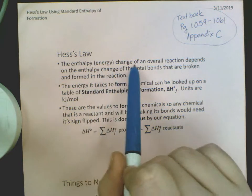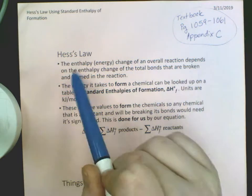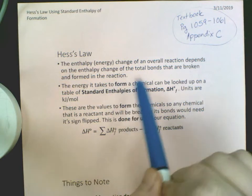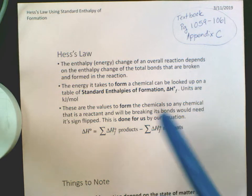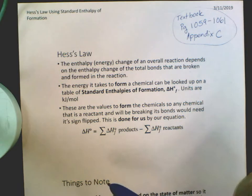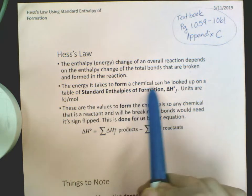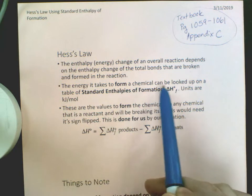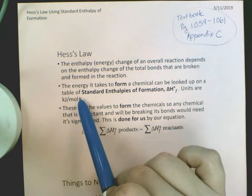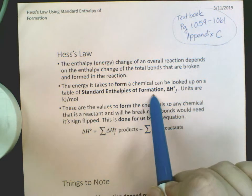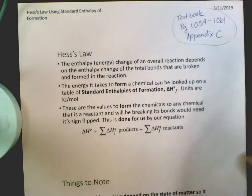The enthalpy or energy change of an overall reaction depends on the enthalpy change of the total bonds that are broken and formed in the reaction. Every chemical reaction has bonds that are breaking and bonds that are forming so that those atoms can rearrange to make the new chemicals. The energy it takes to form a chemical can be measured, and we have created tables of standard enthalpies of formation, or delta H not F.